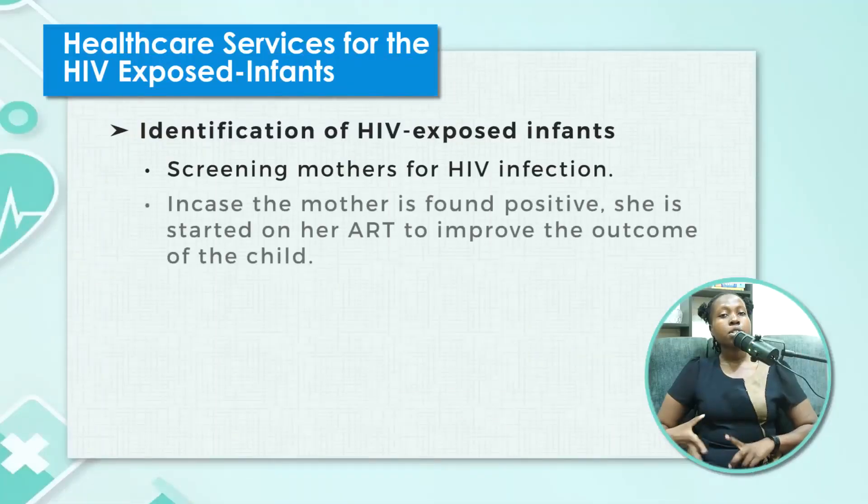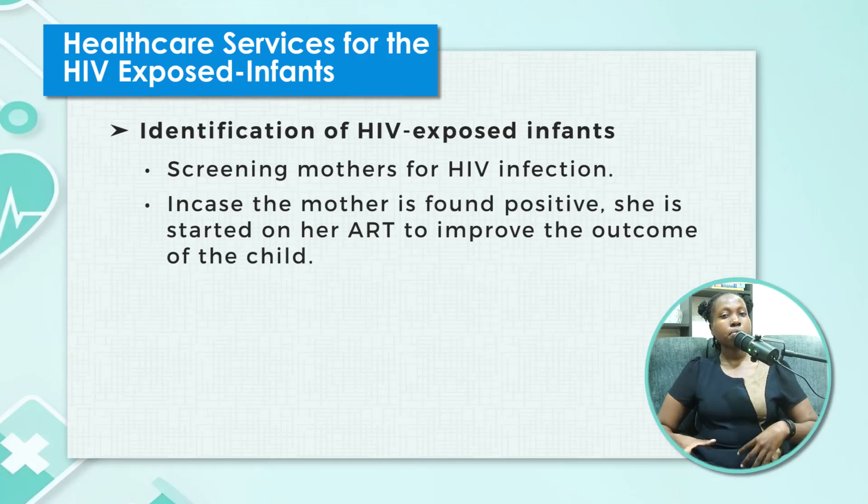During antenatal care, there are scheduled times in the first and last trimester where mothers are checked for their HIV serology. In case a mother is found positive, she is started on her ART to improve the outcomes of the child. In case an infant comes in and the mother's serostatus is not known — for example, children in babies' homes — we can do HIV serology on the infant to determine their status.